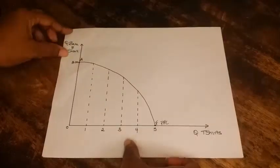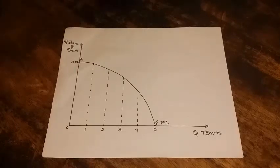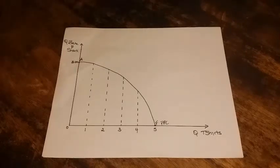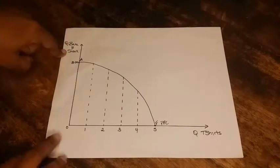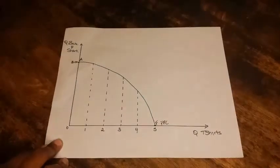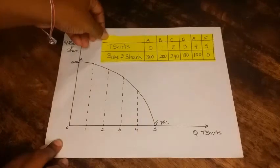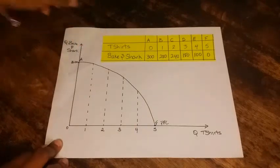Let's get our PPC ready. In this diagram we're going to be looking at two goods being produced. The goods we're going to be looking at in this case would be bacon shark and t-shirts, and these are the combinations that we're going to be producing. I've already started to fill out some of the points and we're going to continue with the rest.